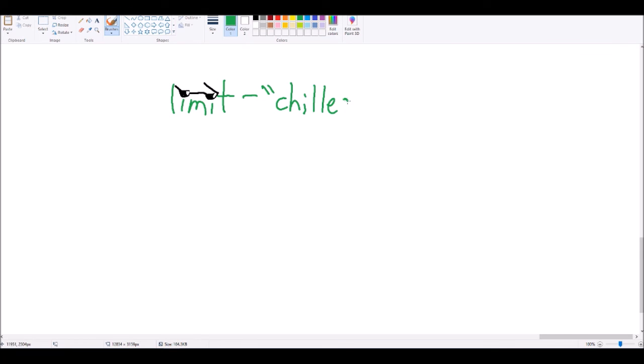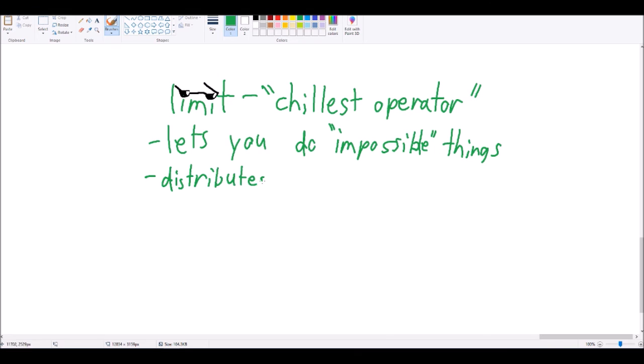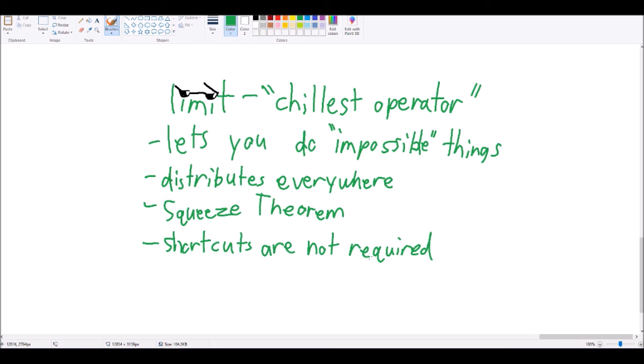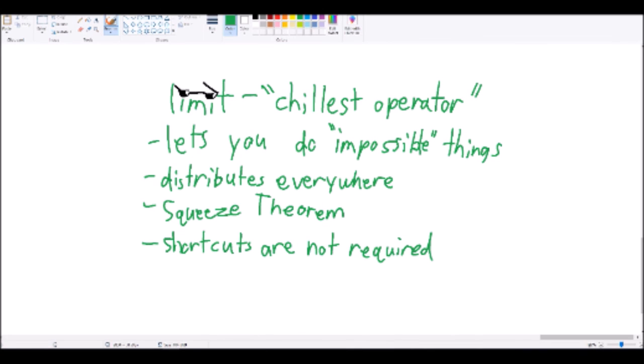So there you go. The limit is the chillest operator ever because it lets you do things that you normally are unable to do, while still distributing through addition, subtraction, multiplication, division, and compounding. Plus, if trig is giving you a headache, you can use squeeze theorem to try to simplify.